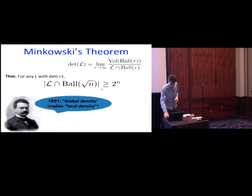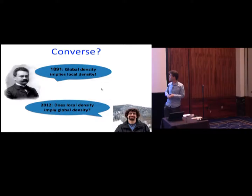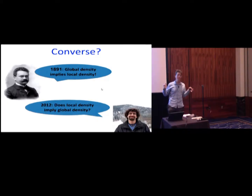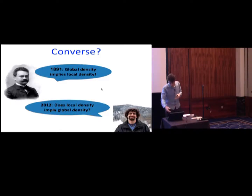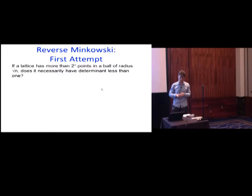But it's been like that for a century and almost a century and a quarter. And then 120 years later came Daniel Dadush and asked the converse. He basically asked: is the converse also true? If I have lots of lattice points close to the origin — lots of points in a ball of radius √n — does it mean that I have global density? Does it mean the determinant is also small? Here's the first attempt to make this precise.